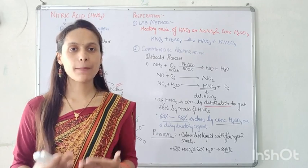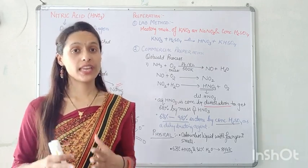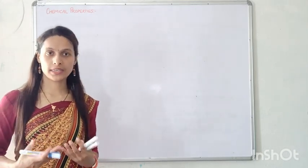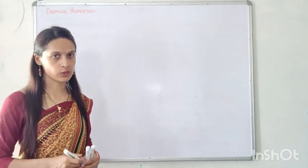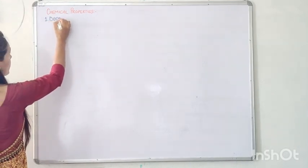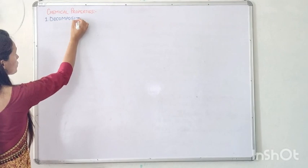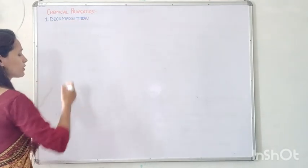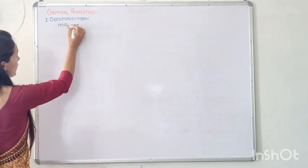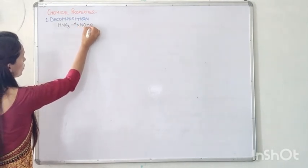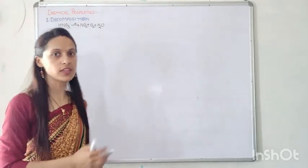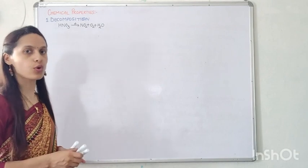Now we will deal with the chemical properties of nitric acid. The very first important property is decomposition: nitric acid undergoes thermal decomposition to give NO2 + O2 + H2O.